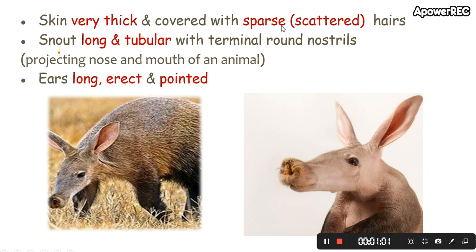Sparse means scattered, so scattered hair is present. The snout — the snout is the anterior projecting nose and mouth of an animal — is long and tubular with terminal round nostrils. The ears are long and erect, each pointed.